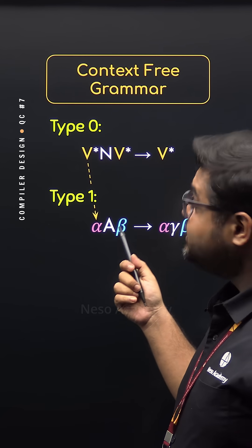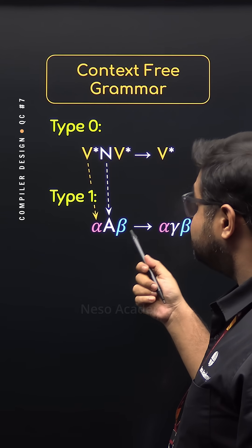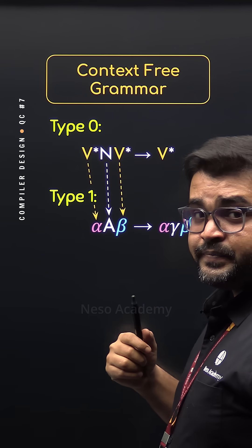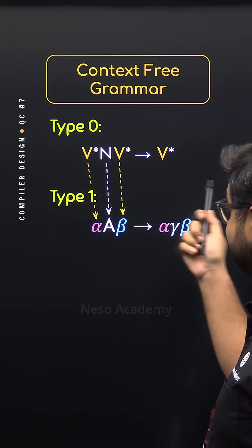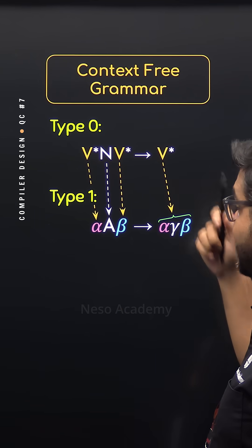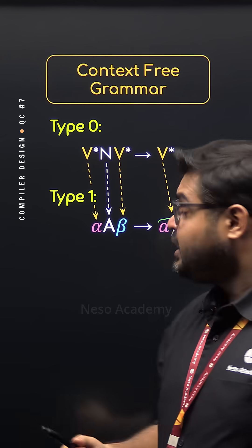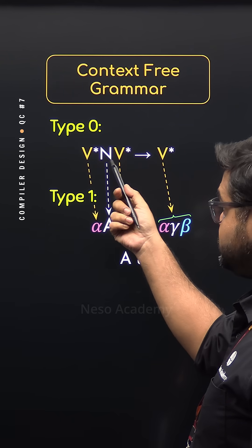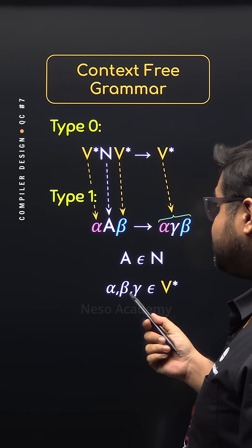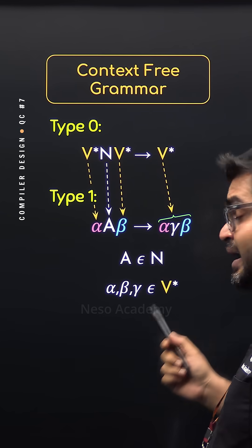On the other hand, the entire right-hand side is V*. So we can say A belongs to N, that is the set of non-terminals, and α, β, γ belong to V*. N is string over N union T.